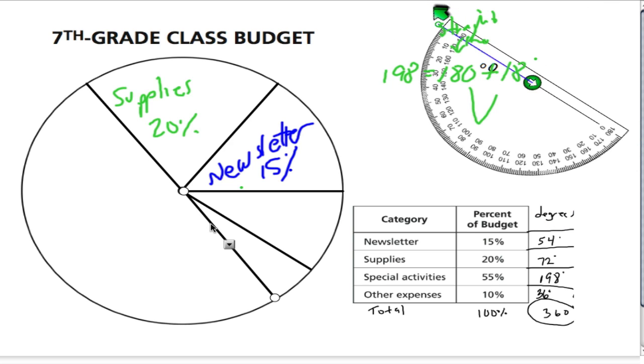And let's see what we should do next. That 180 degree line that we drew here, we don't need that anymore. Because this whole chunk right here is the special activities section of 198 degrees. So, I'm going to put special activities, 55%.